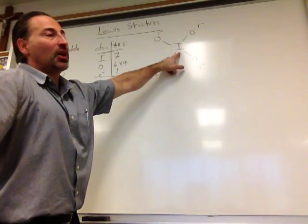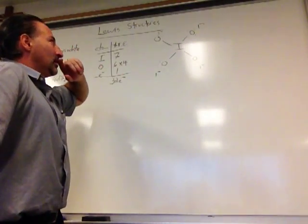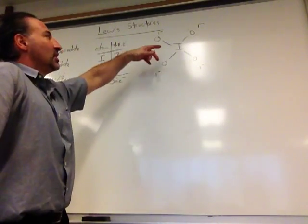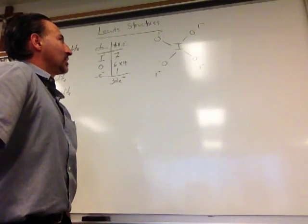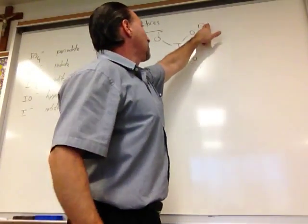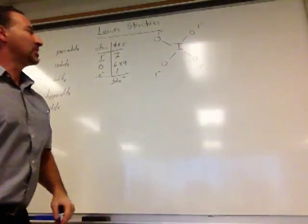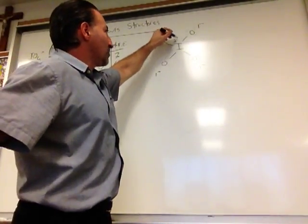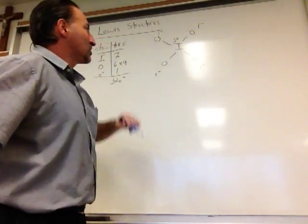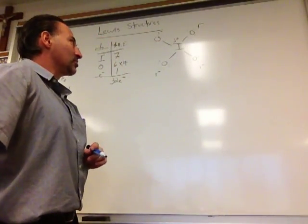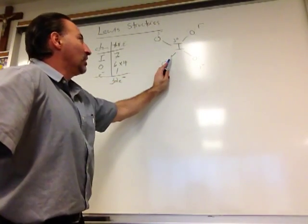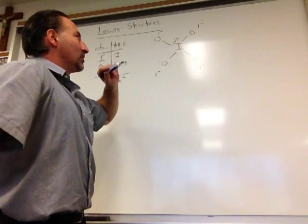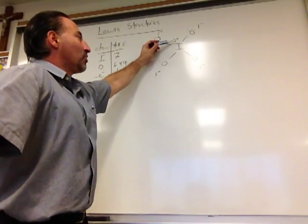So anything that is as big as phosphorus or bigger, including phosphorus, is able to accommodate expanded octets. So that allows us to help dissipate the formal charges. Iodine is going to have a formal charge of plus 3. The reason for that is it wants to have possession of 7 electrons, being a halogen in group 17, but it only actually has possession of 4 because bonding pairs count for 1 when you account for charges.